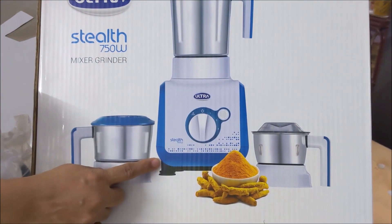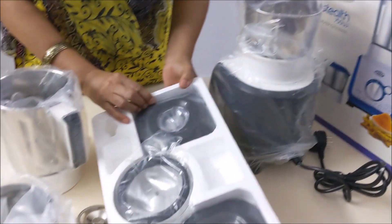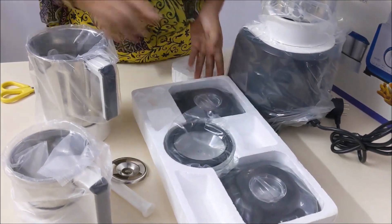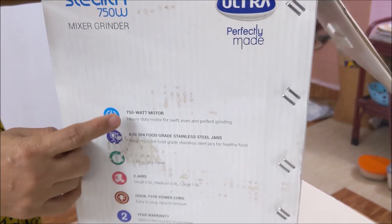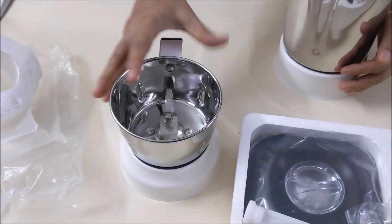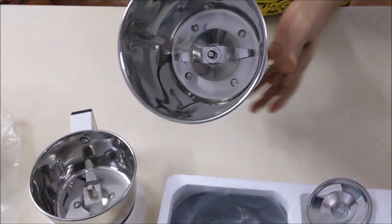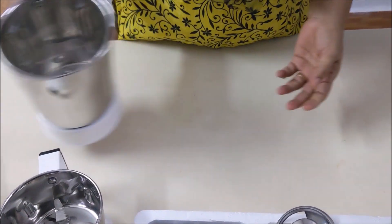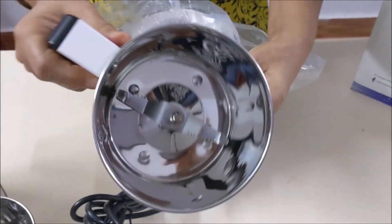So these are the things, the lids you can see, and the three jars. This is 750 watt motor. This is the 0.5 liter jar, small chutney jar, and this is the large one that is 1.5 liters. This is the 0.8 liter jar and the cool thing about this is this hook type plug.